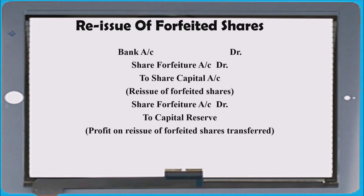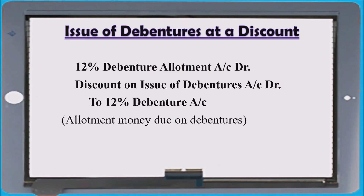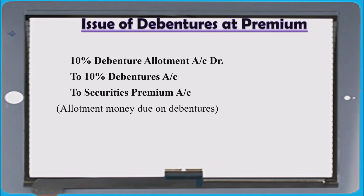Try to write how the number of debentures or shares comes into the values at application, allotment — practice maximum to finish the smart question successfully. Another area: debentures. Debentures can be issued at a discount, which will create a loss. The entry will be: debenture allotment, discount on issue or loss on issue of debentures to debentures. If issued at premium, premium will always be credited: debenture allotment to debenture, to securities premium reserve account.